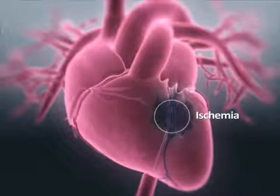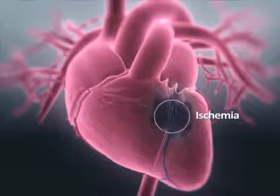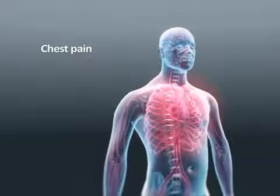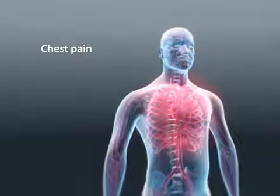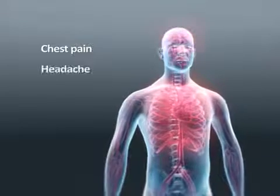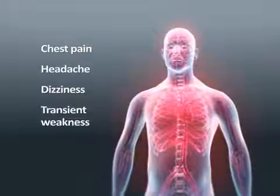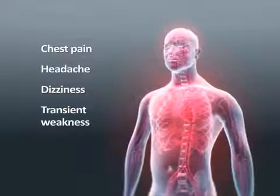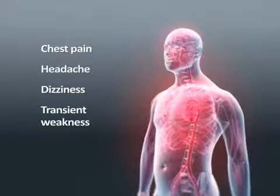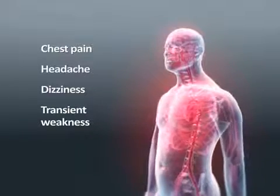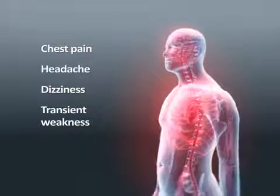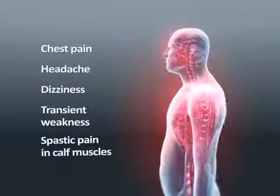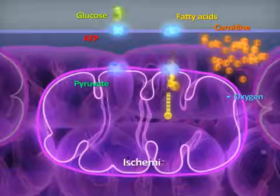Heart ischemia is quickly apparent and most often manifests as chest pain. Brain ischemia presents as headache, dizziness, or transient weakness. By contrast, ischemia of the skeletal musculature most often manifests as a spastic pain in the calf muscles during walking.